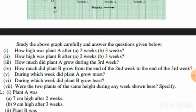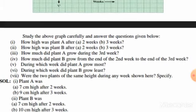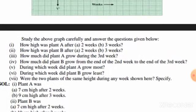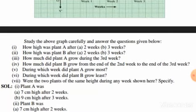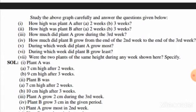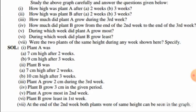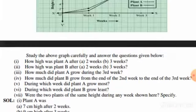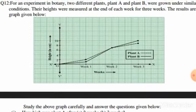Study the graph carefully and answer the questions. In part (a), how high was plant A after two weeks and three weeks? From the graph, plant A was 7 centimeters after two weeks and 9 centimeters after three weeks. In part (b), how high was plant B after two weeks and three weeks? Plant B was 7 centimeters high after three weeks.